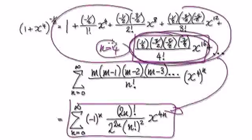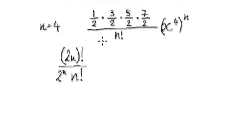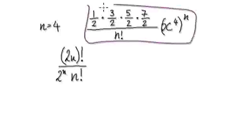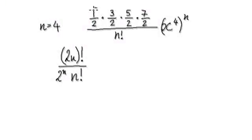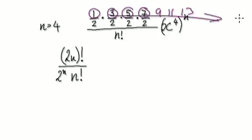So let's zoom in for the case when n equals 4. Now if you look at this, the pattern here goes on and on forever. You've got 1 times 3 times 5 times 7 times 9 times 11 times 13, and so on — it goes all the way to infinity.